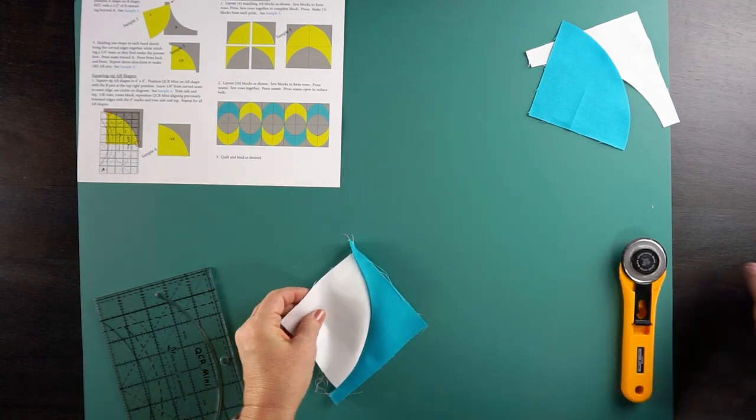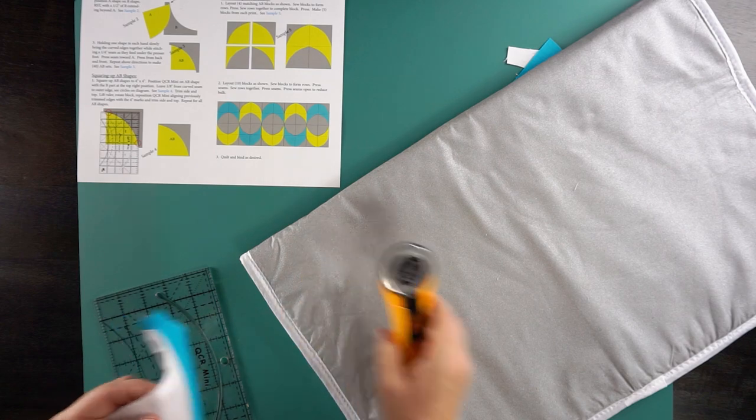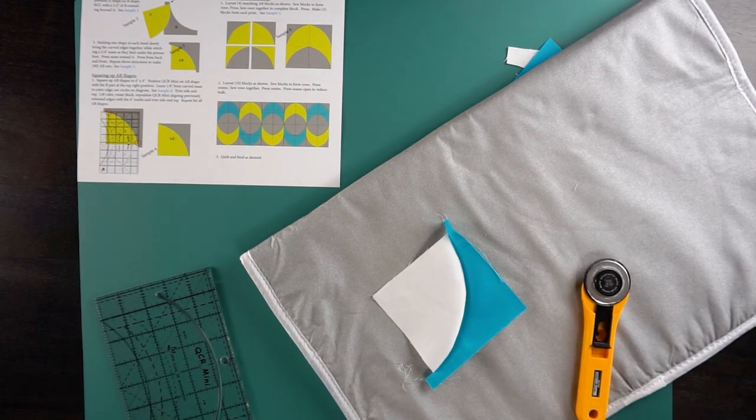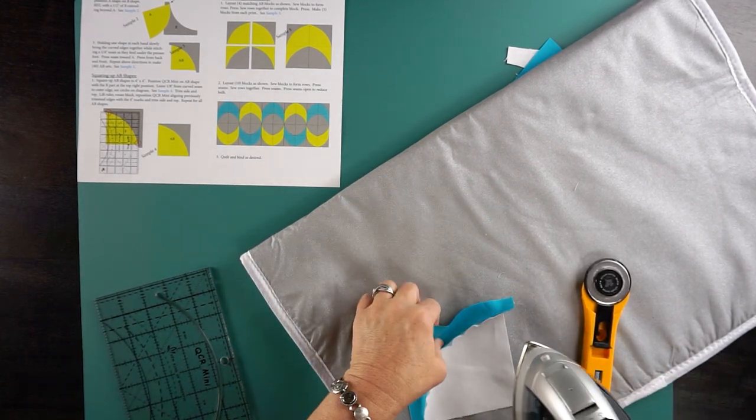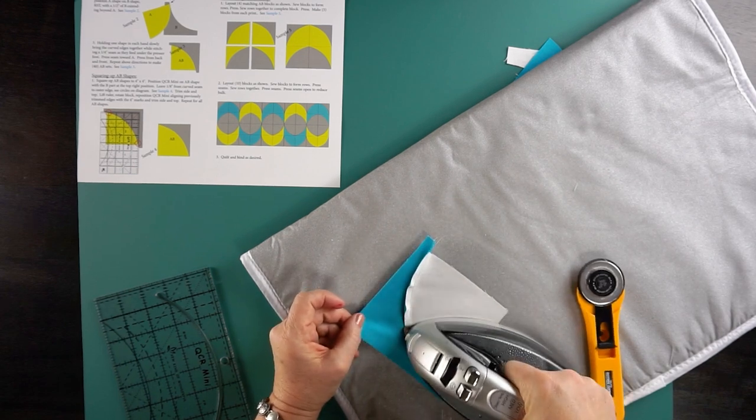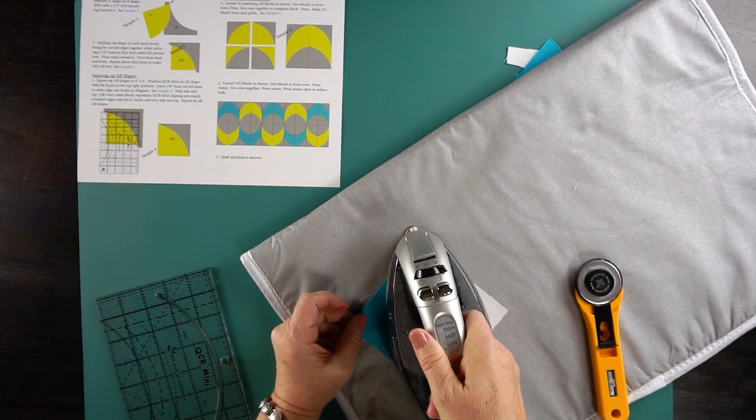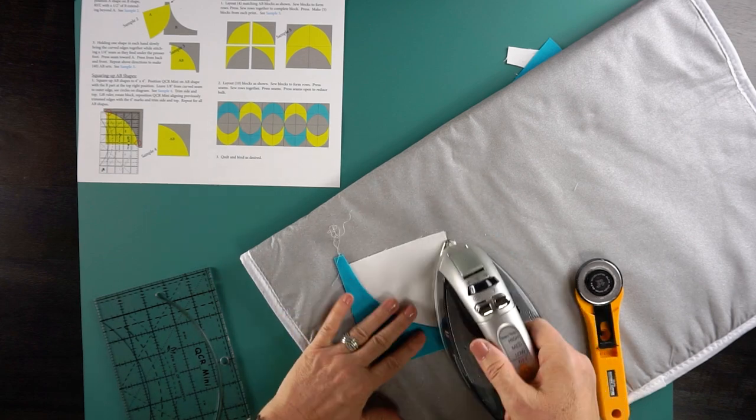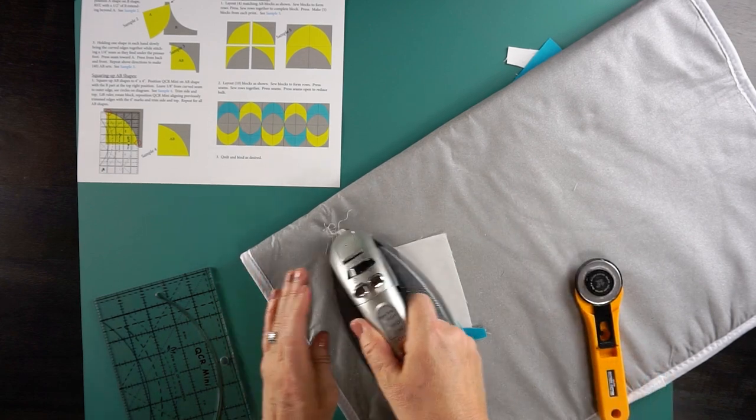Let's press on the back. I'm going to press on the back first. For this, I'm just going to press towards the dark fabric. I could press either direction. Use a little steam, turn it over, press on the front.